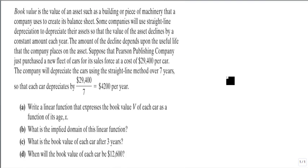Book value of an asset, such as a building, piece of machinery, or car, is what a company uses to create its balance sheet. Some companies use straight-line depreciation so their assets devalue at the same rate every year. Suppose Pearson Publishing just purchased a new fleet of cars for its sales force at $29,400 per car. They want this to depreciate over seven years, so it's depreciating by $4,200 per year.